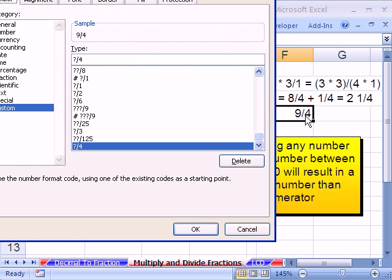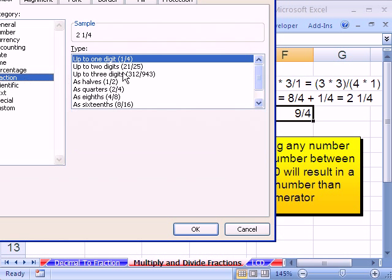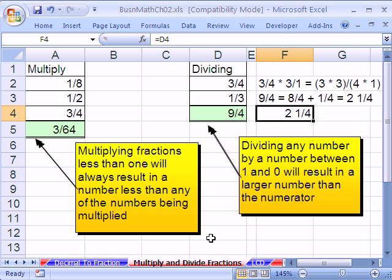So now I'm going to format this cell, Control-1. Click on Fraction. Let's see if we can find a built-in one like this one as quarters. And sure enough, even the first one works just fine. So we click OK.